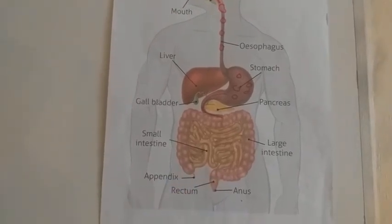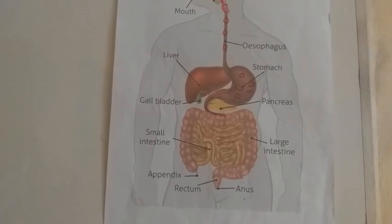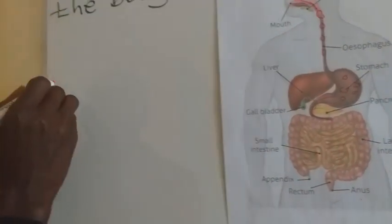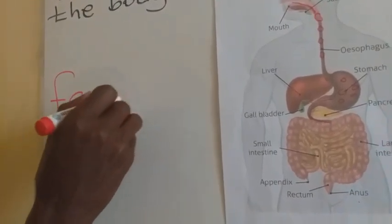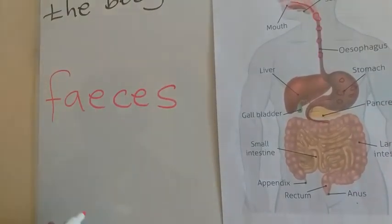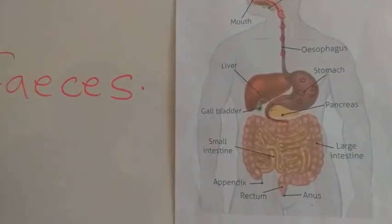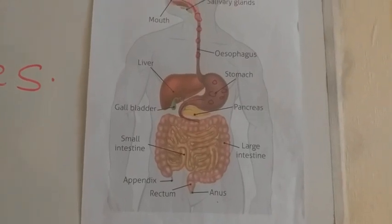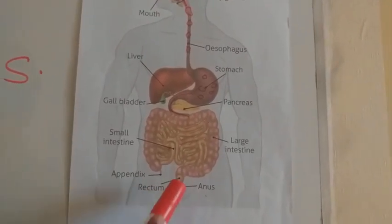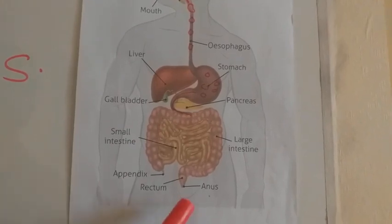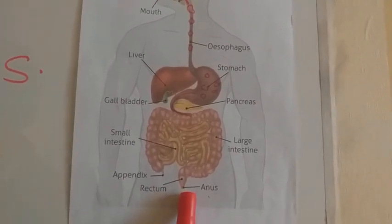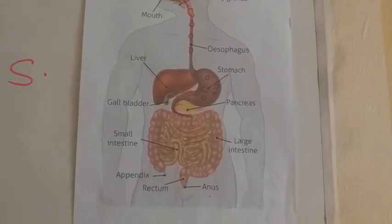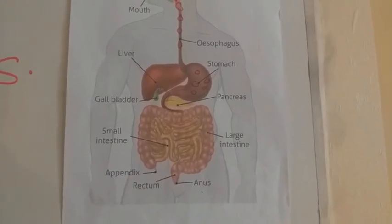From there, the remains are moved into the rectum. In the rectum, those remains are stored in the form of feces. These feces stay in the rectum temporarily, after which they are moved out into the anus, which is our last part in the digestive system that allows the feces to move out of the body.